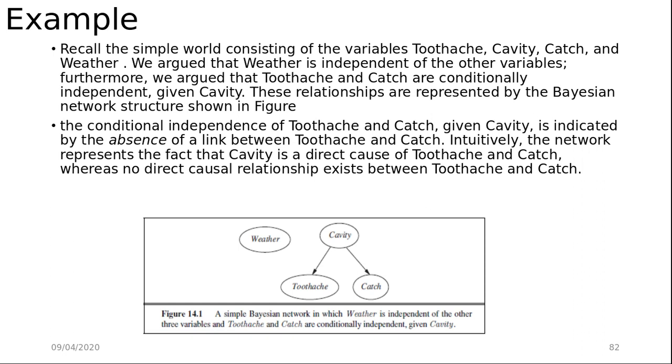Recall the simple world described earlier. Here is a figure consisting of the variables toothache, cavity, catch, and weather. We argued that weather is independent of the other variables, and furthermore that toothache and catch are conditionally independent given cavity. These relationships are represented by the Bayesian Network structure. In the diagram, a simple Bayesian Network shows that weather is independent of the other three variables, and toothache and catch are conditionally independent given cavity. The conditional independence of toothache and catch given cavity is indicated by the absence of a link between toothache and catch. Intuitively, the network represents the fact that cavity is a direct cause of toothache and catch, whereas no direct causal relationship exists between toothache and catch.